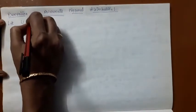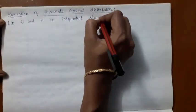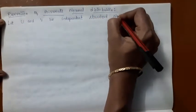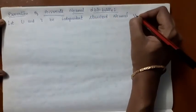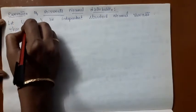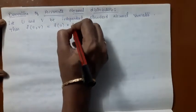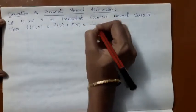Let us derive the bivariate normal distribution in this video. We are going to derive the density function of the bivariate normal distribution. Let u and v be independent standard normal variates. Then f(u, v) is equal to f(u) times f(v), since they are independent standard normal variates.